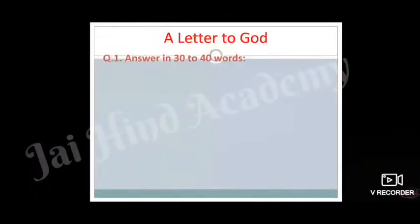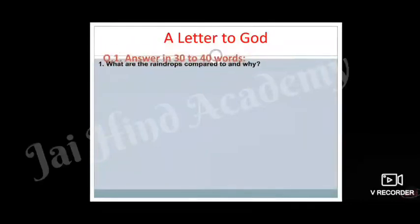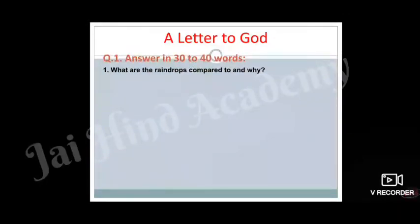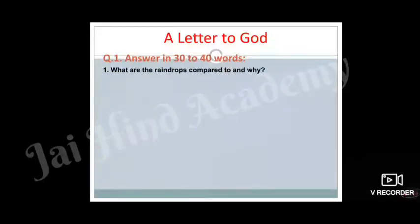The first question we are going to see is answered in 30 to 40 words. I am not going to discuss all the questions, but I will tell you some important points to keep in mind while writing these answers. First question is: 'What are the raindrops compared to and why?' You will see this question has two parts. First: what are the raindrops compared to? The WH word is 'what.' You will also see the tense is present tense, though this lesson is mostly written in past tense.